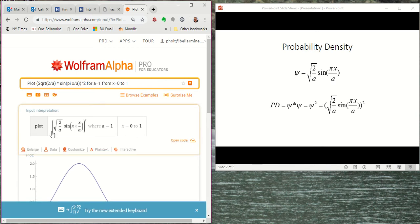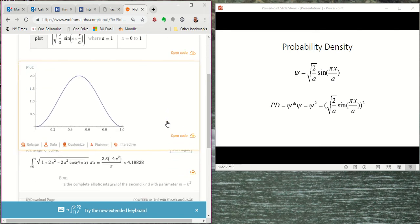First of all, Wolfram will indicate its interpretation of what we've typed. And so this is correct wave function. It's squaring it. We're letting a be equal to 1. We're plotting from x equals 0 to 1. And there is the function right there.